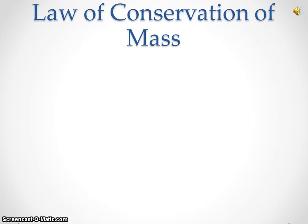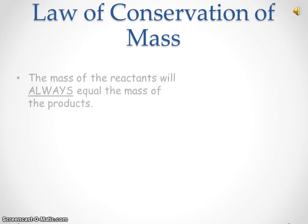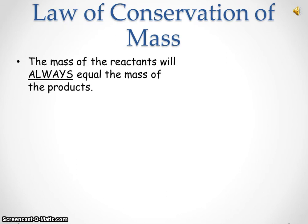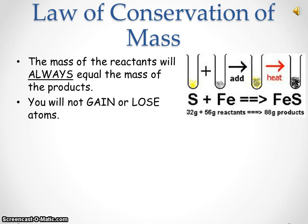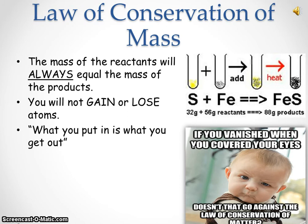Law of Conservation of Mass. The Law of Conservation of Mass states that the mass of the reactants will always equal the mass of the products. Using our example on the right, we have 32 grams of sulfur reacting with 56 grams of iron to yield 88 grams of iron 2 sulfide. As we react 32 grams plus 56 grams, we yield a total of 88 grams as our product. We never gained or lost atoms. In summary, what you put into the reaction is what you will get out of the reaction.